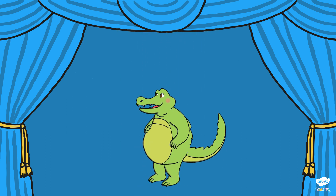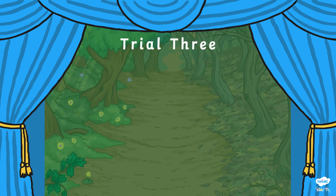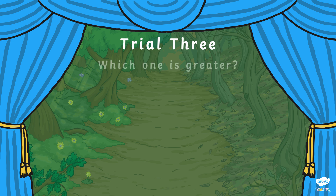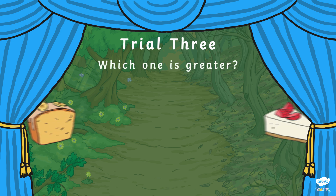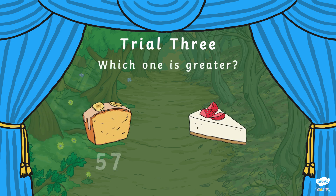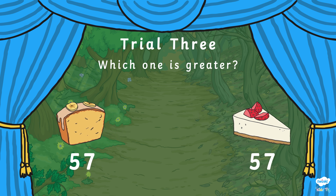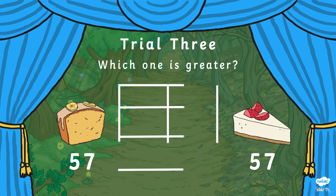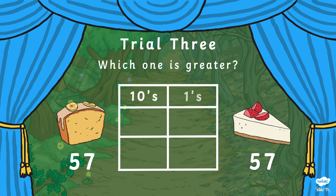It's the last trial and the final test for Crock-8. His friend has left 2 of Crock-8's favourite cakes. The number 57 is next to the banana cake and the number 57 is next to the cheesecake. But which one is greater?